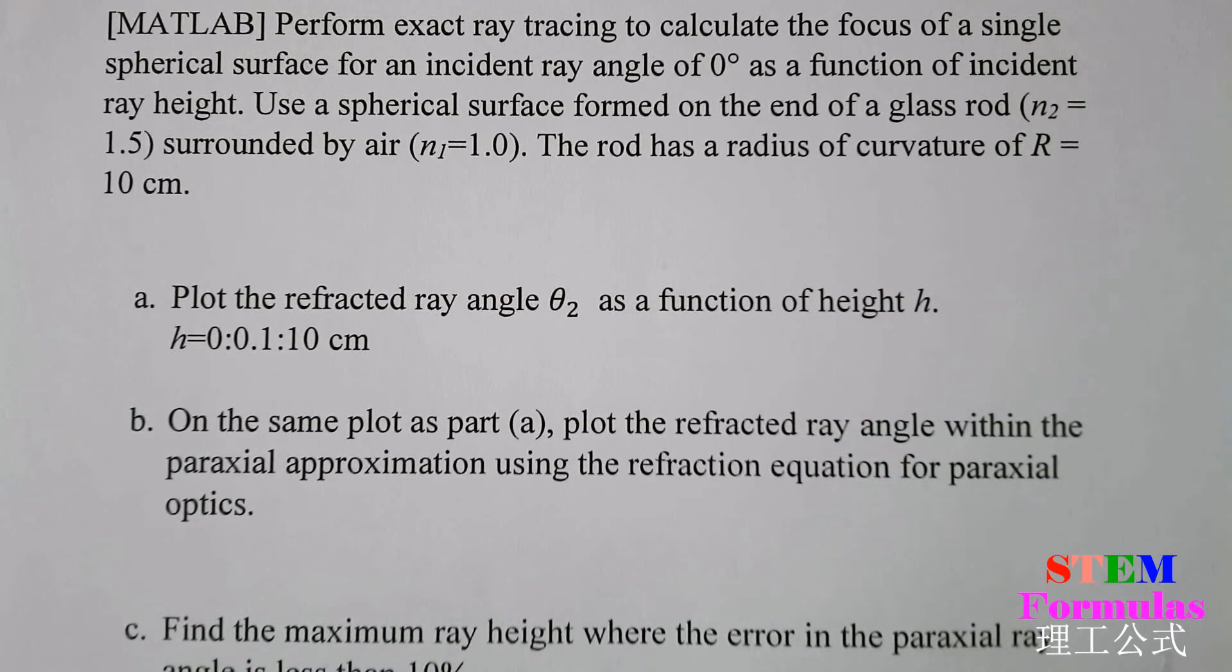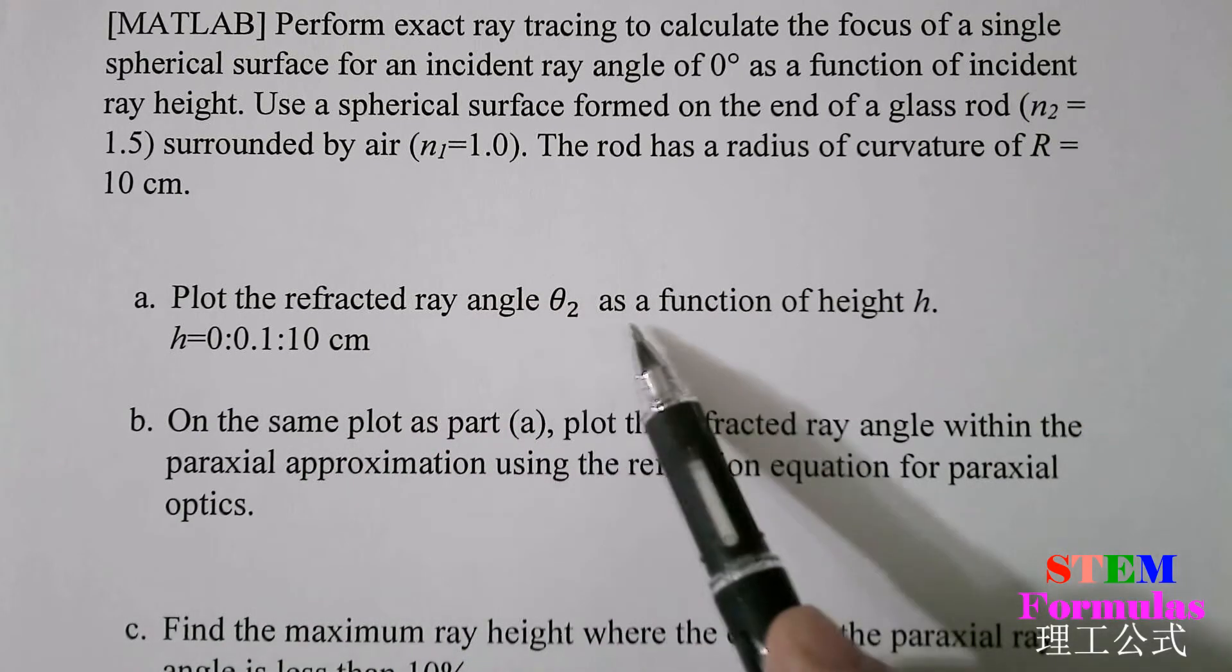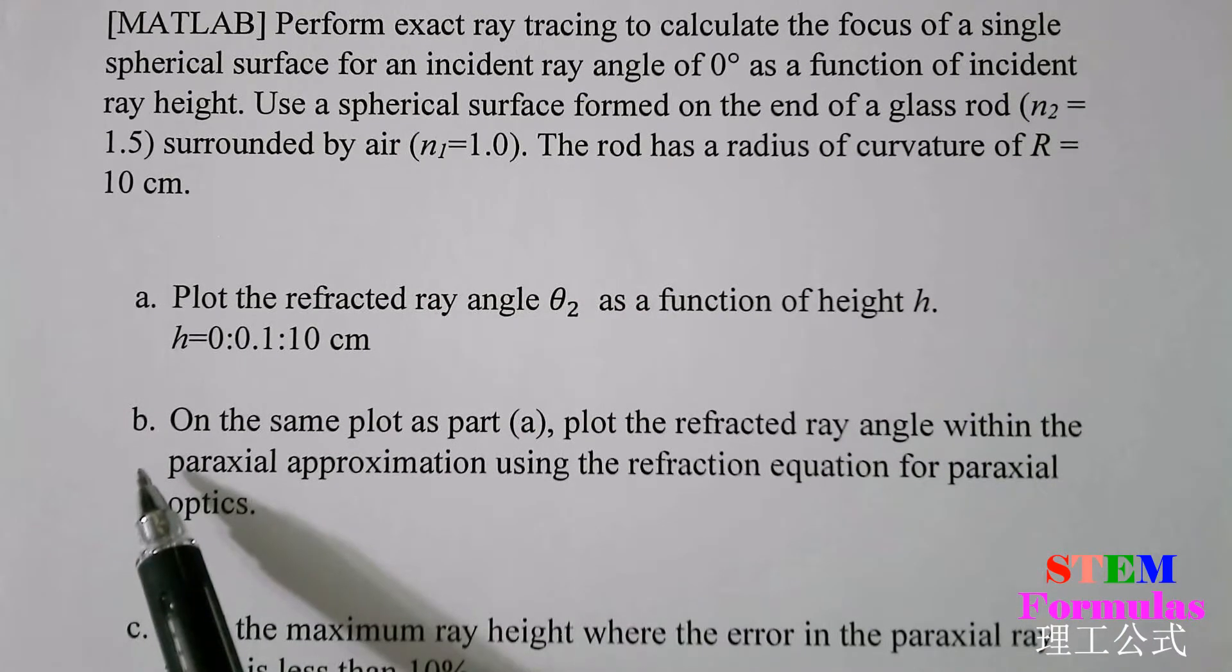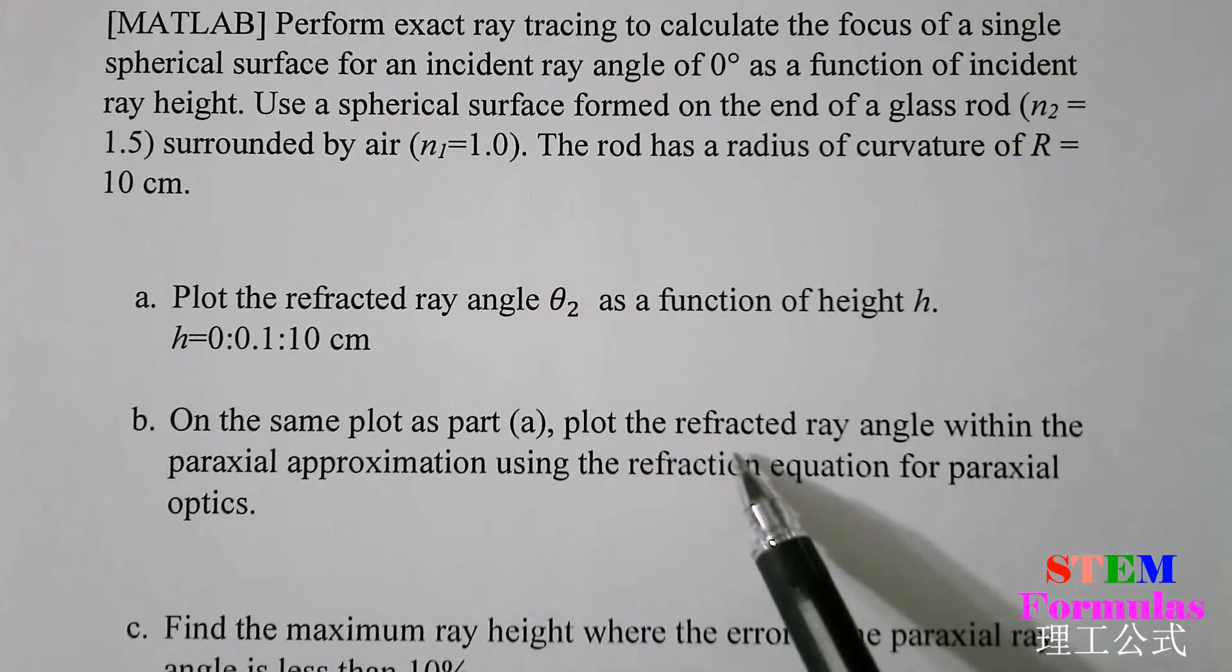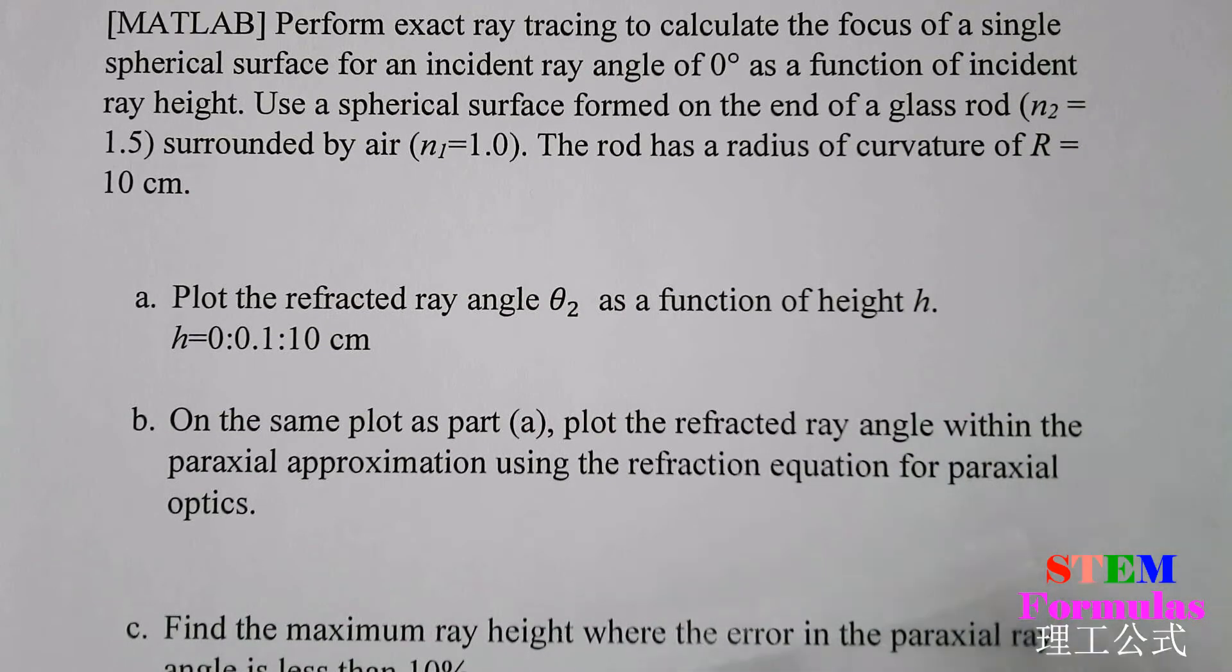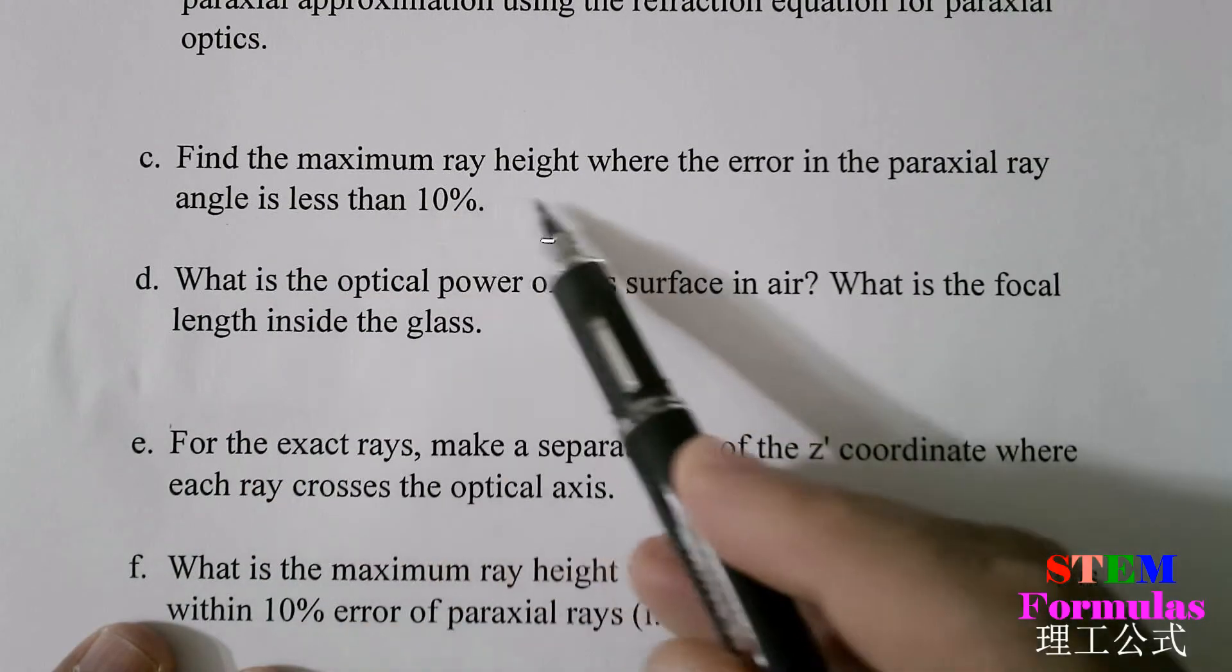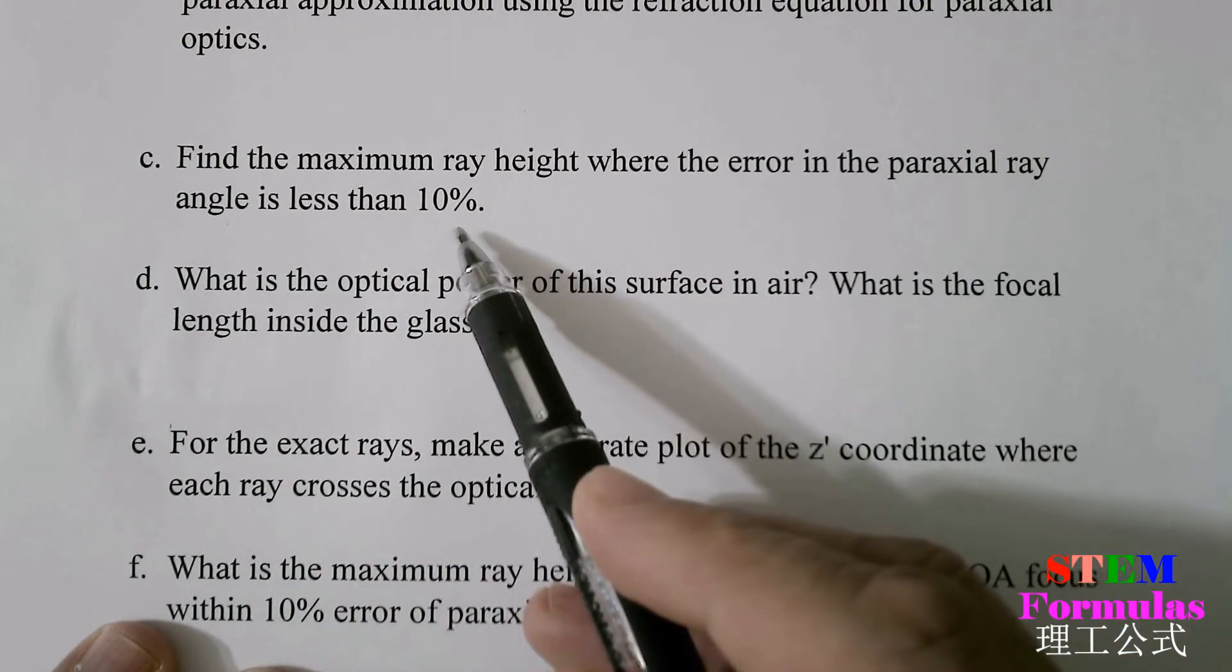Question A: Plot the refracted ray angle θ₂ as a function of height h. On the same plot as part A, plot the refracted ray angle within the paraxial approximation using the refraction equation for paraxial optics. Find the maximum ray height where the error in the paraxial ray angle is less than 10%.